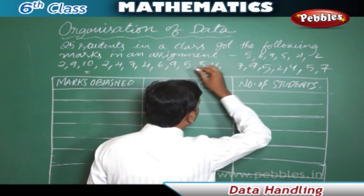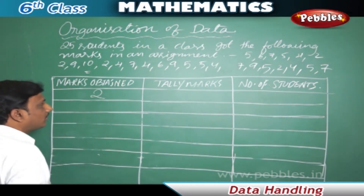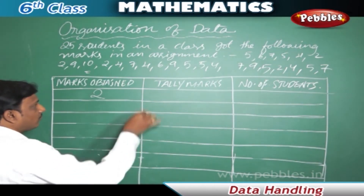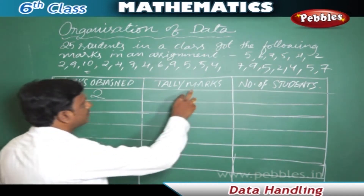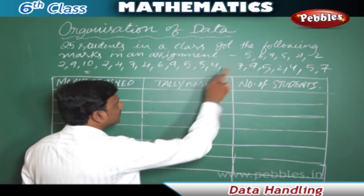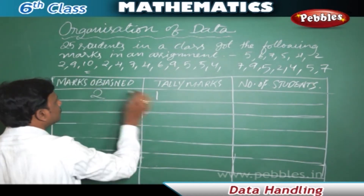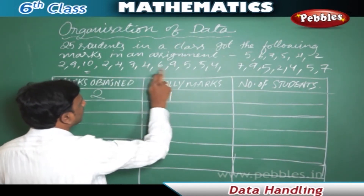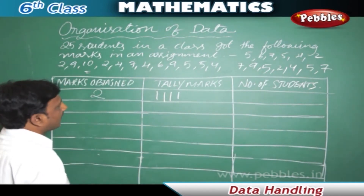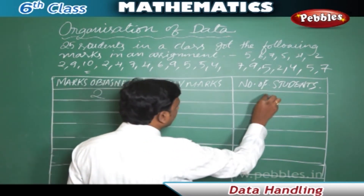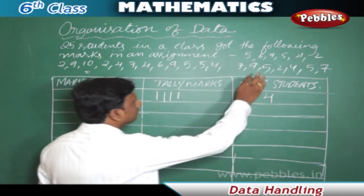This assignment is out of 10 marks and the least mark is two. We use tally marks to count the number of students easily — one tally mark for each student. Two marks: four students got two marks. Three marks: no one got three marks.